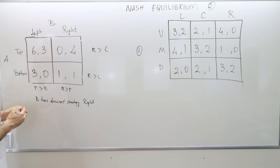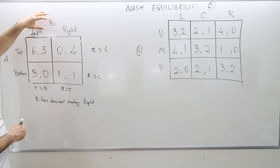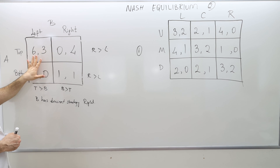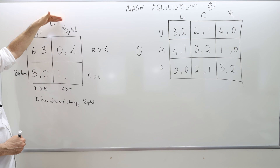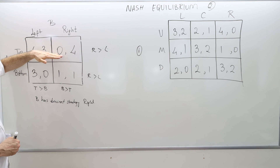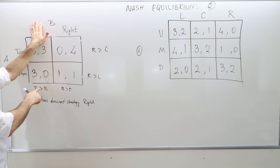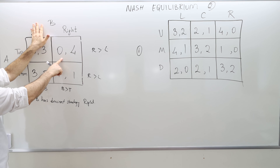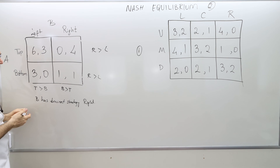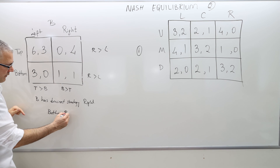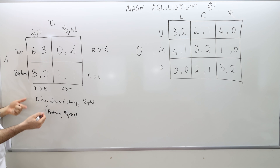Given that player A didn't have a dominant strategy, I can iterate this reasoning. Player B should never play left because it's a dominated strategy. So given that B is going to play right, for player A it basically boils down whether he would like to get payoff 0 or payoff 1. This column will never occur because B will never choose it. So obviously, player A prefers 1 rather than 0, so he should go for bottom. As a result, bottom and right is the dominant strategy equilibrium.